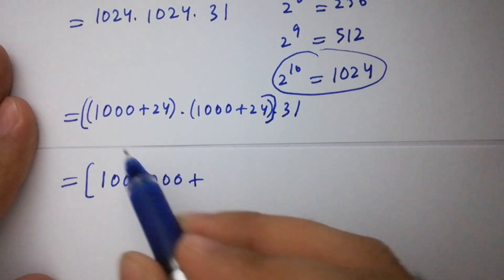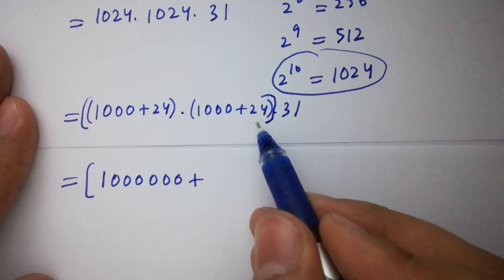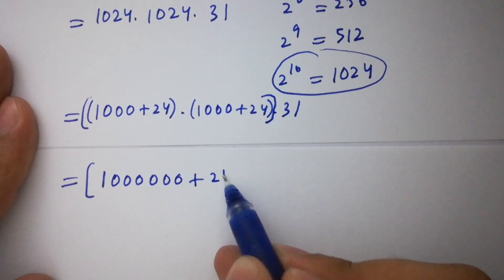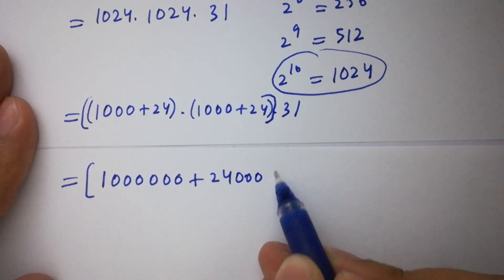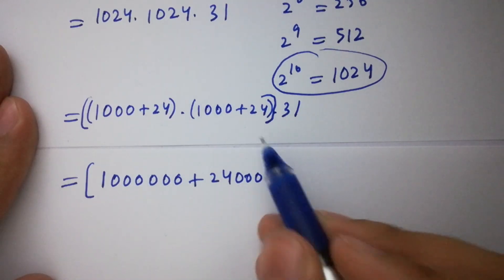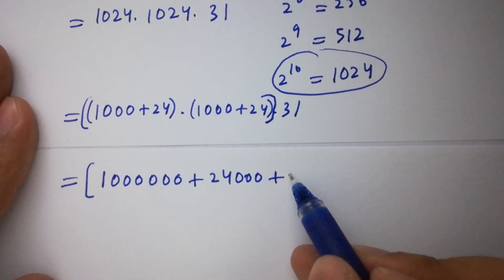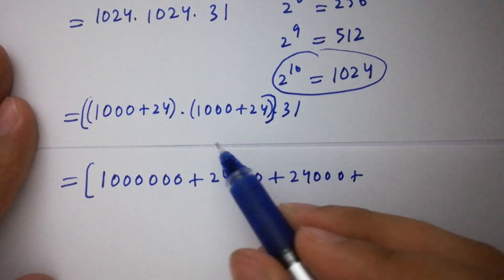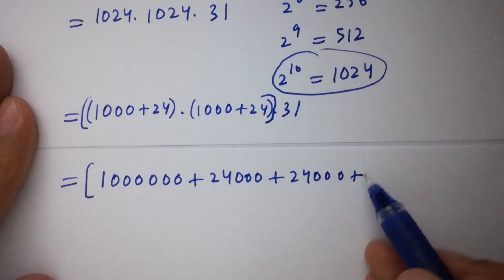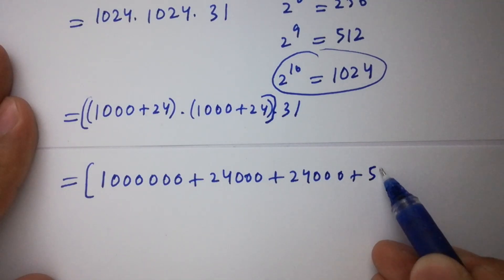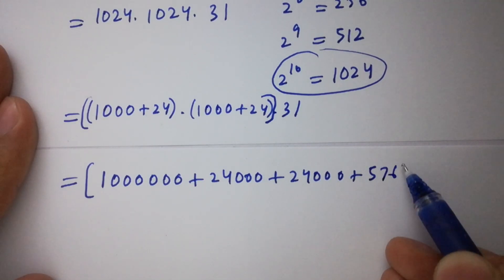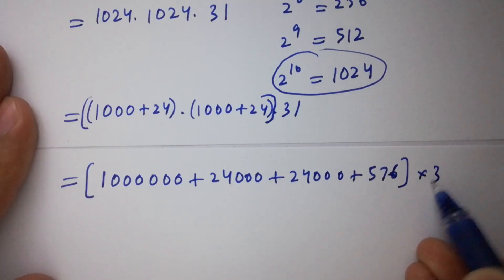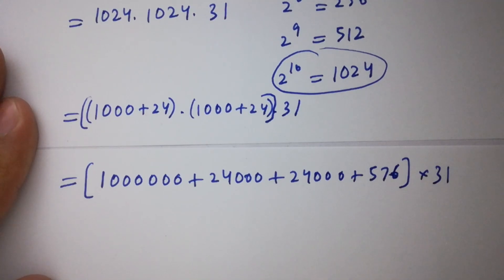Expanding: 24 times 1000 gives 24,000, plus another 24,000, plus 24 times 24 which gives 576, and 1000 times 1000 gives 1,000,000. All of this times 31.